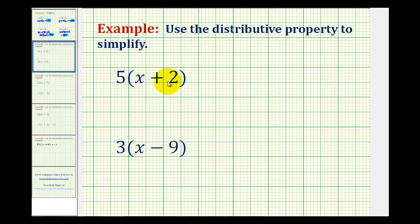We want to use the distributive property to simplify the given expressions. So here we have five times the quantity x plus two, so we need to multiply the five and the x as well as the five and the two.